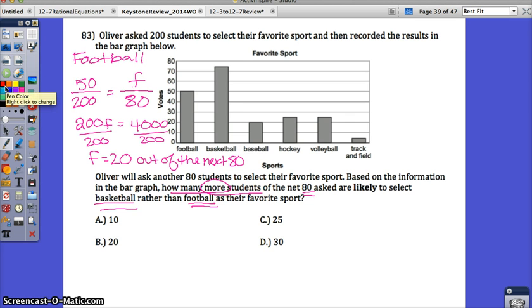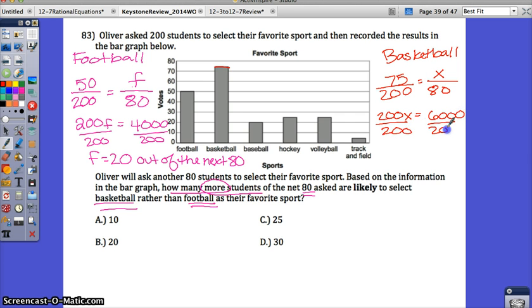Now let's do that same thing for how many students out of the next 80 will select basketball. Look at your bar graph to start you off. Out of 200 students, 75 selected basketball, and I want to know how many this will be out of 80 students. Again, a proportion, cross-multiply and divide. So 30. 30 will select basketball out of the next 80.